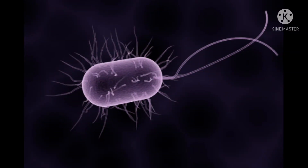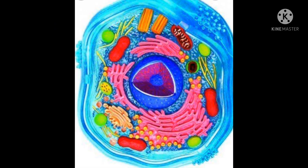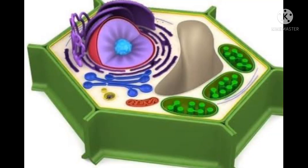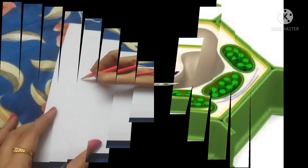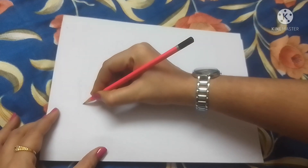Prokaryotic cells are smaller and simpler than eukaryotic cells — just like bacteria. Bacteria and other single-celled or unicellular organisms are made up of just one cell. Eukaryotic cells are bigger and more complex than prokaryotic cells. Although animals and plants are both eukaryotic, there are differences between animal and plant cells.